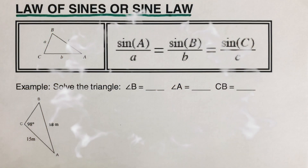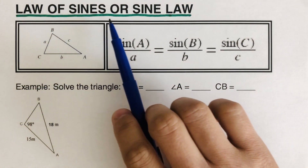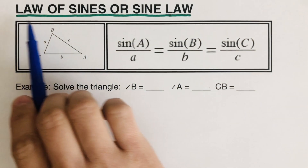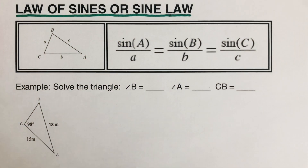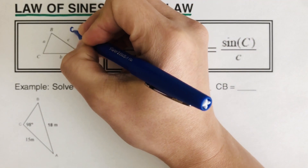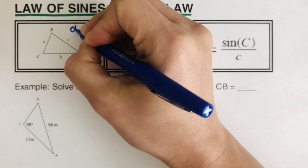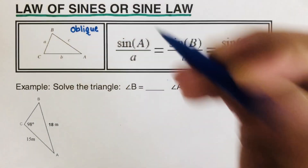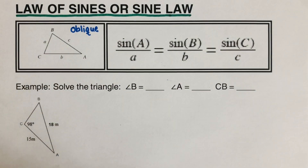Hello everyone. Today we will be talking about the law of sines, or the sign law. This law of sines can only be used for triangles classified as oblique triangles. An oblique triangle is a triangle that has no right angle.